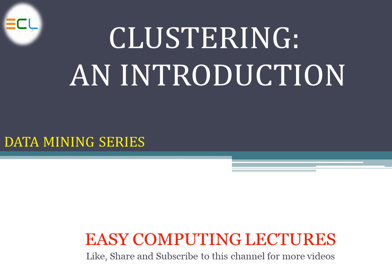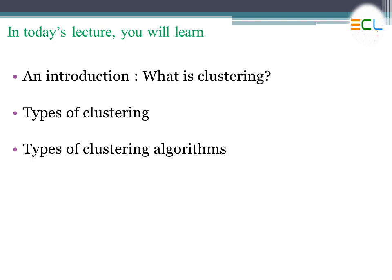In today's lecture we will talk about clustering, see different definitions of clustering with suitable examples, discuss different types of clustering, and then cover different clustering algorithms or models. In the previous lectures we discussed different types of classification algorithms such as KNN, Naive Bayes, decision trees, and single-layer neural networks.